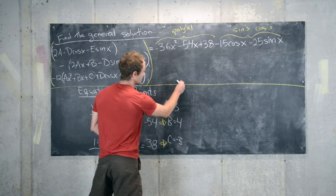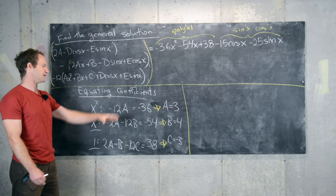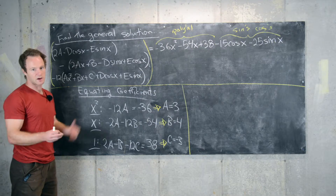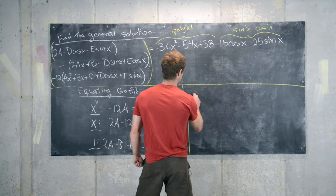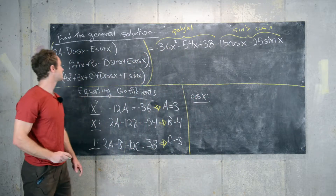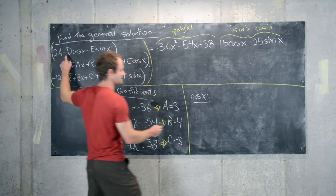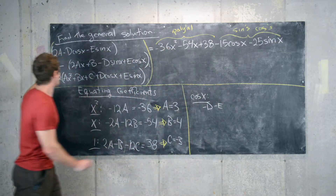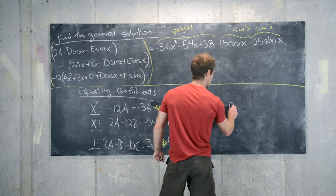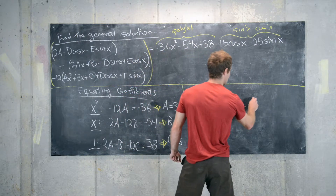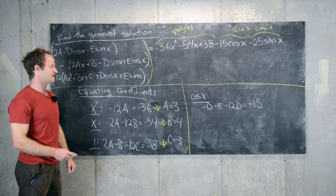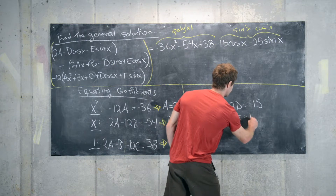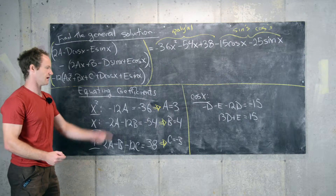Now we equate the cosine and sine coefficients. Sine, cosine, and polynomials are independent, so we can treat them separately. For the cosine terms, collecting from each part of the equation gives us 13d plus e equals 15.